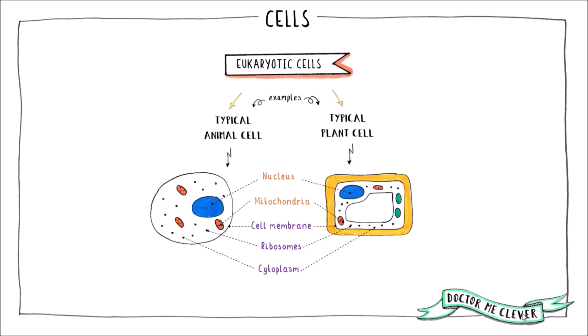The three subcellular structures that are unique to plant cells and not found in animal cells are the large permanent vacuole which contains cell sap. This is a weak solution of salt and sugars.